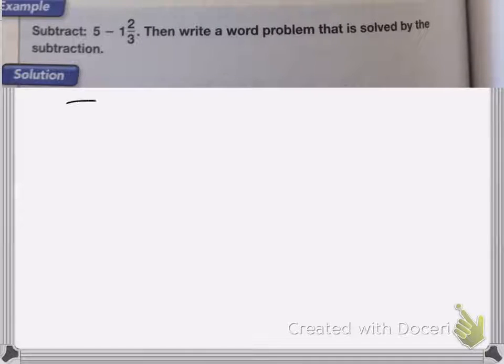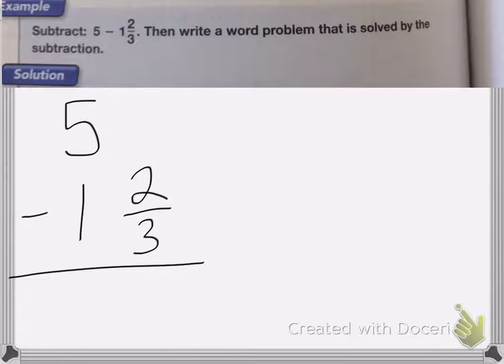So this first part we're going to do 5 minus 1 and 2 thirds. Now we can't take something away from nothing, so we'll need to borrow from the 5 to get a fraction.